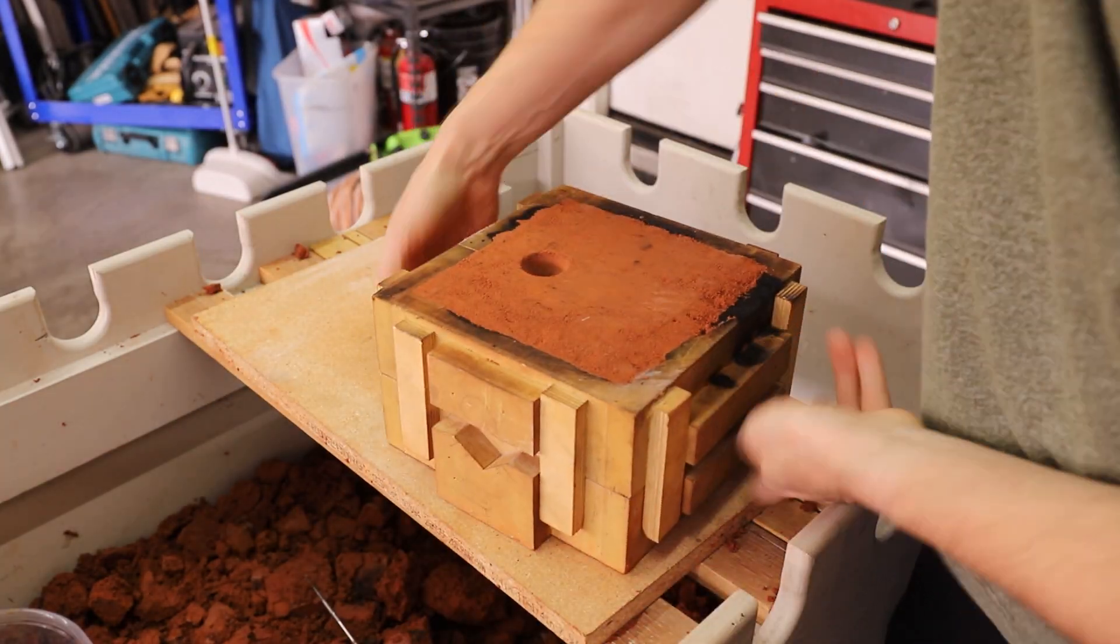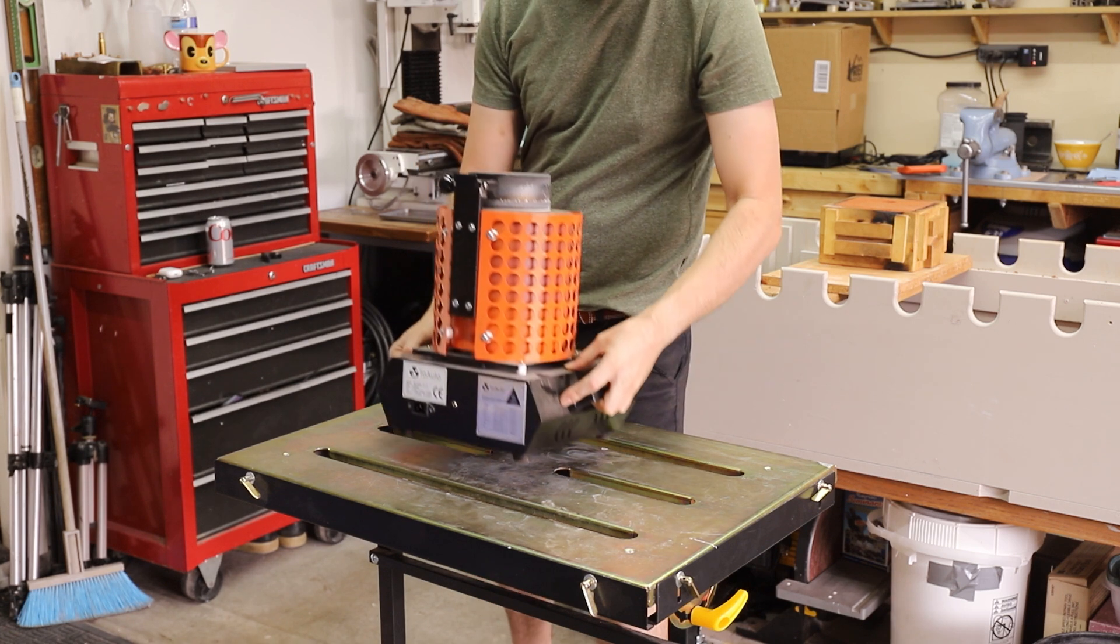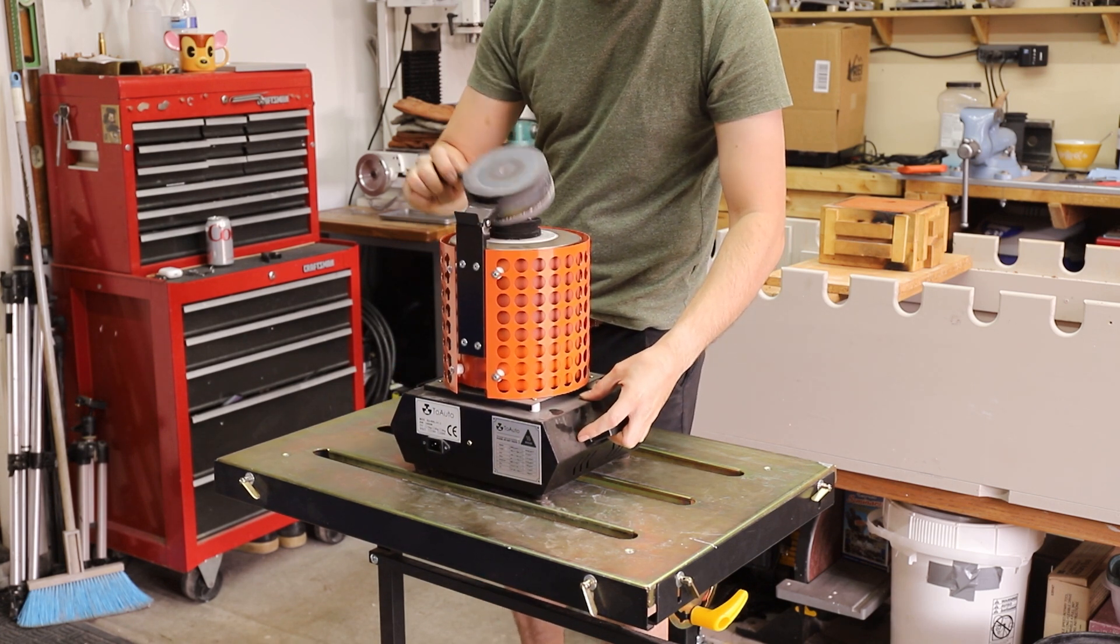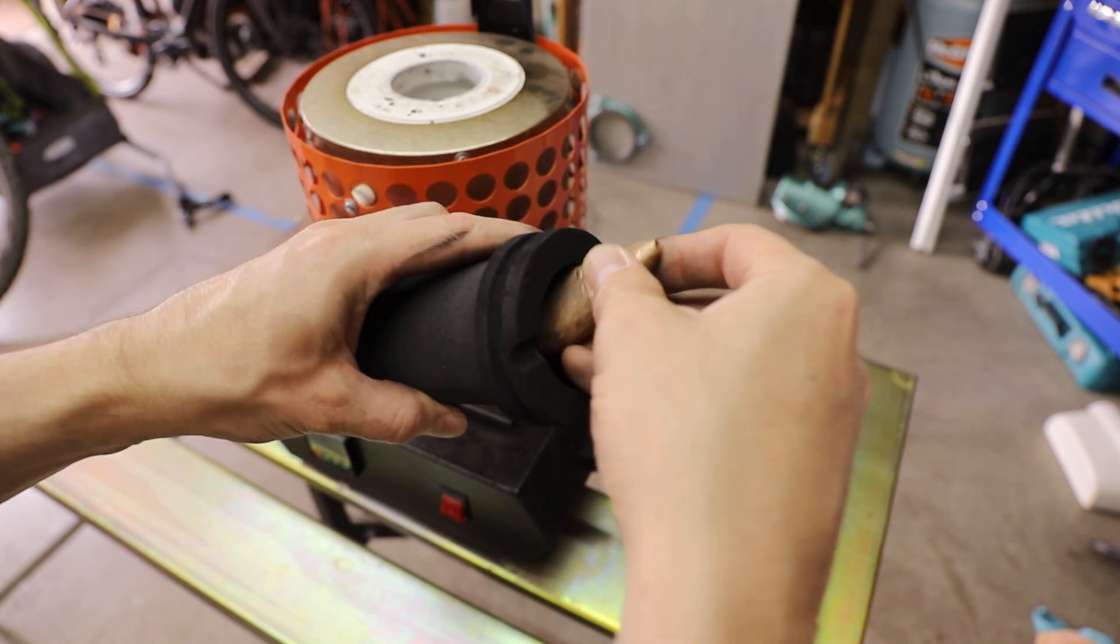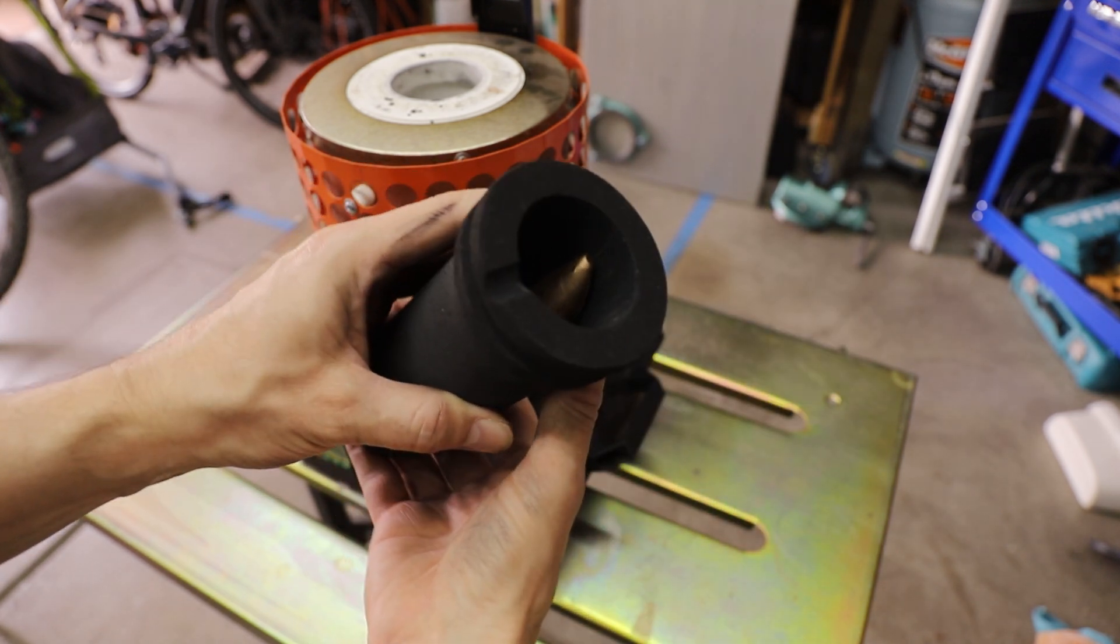Once the mold is done, I can start melting some bronze. This is a pretty small casting, so I can just use my small electric furnace. I'm using bronze made up of roughly 92% copper and 8% tin.